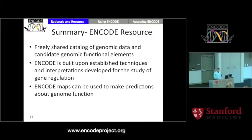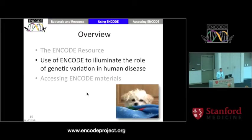In summary, we're trying to create a catalog of all the functional elements of the genome, freely shared with the community. The foundation for this is established techniques and methodologies that have been used for years in gene regulation studies. These maps can be used to make predictions about genome function, which can help you in other work. Now we're going to take a quick peek at how you might use ENCODE to study the role of genetic variation in human disease.